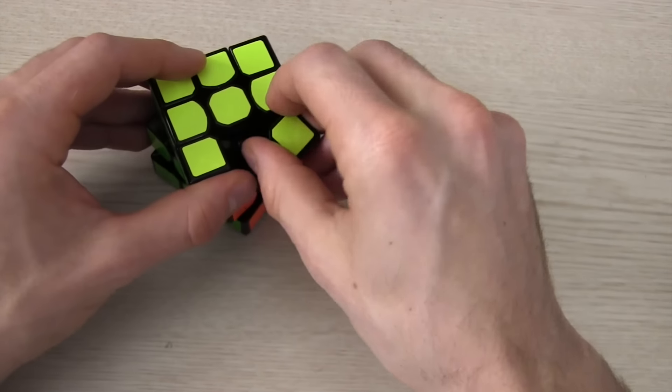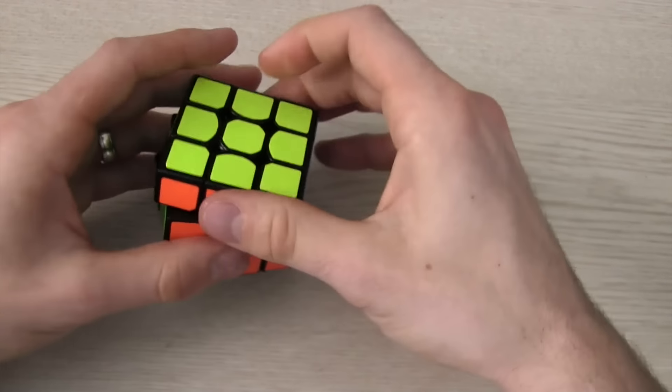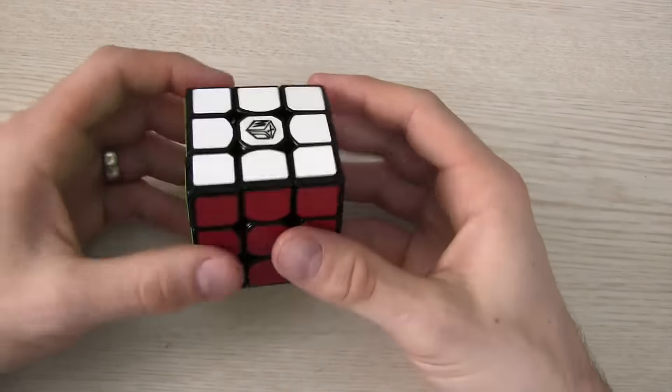With that said, it feels nothing like the Yuxian. The Yuxian was a little bit over 57 millimeters and this one is about 56 and a half. So it's a millimeter smaller.